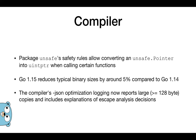Our binary size is reduced by 5% compared to Go 1.14. This is because some metadata from the garbage collector was removed. Also, we have improved JSON optimization logging for our reports — it can be more than 128 bytes and can include explanations of escape analysis decisions.